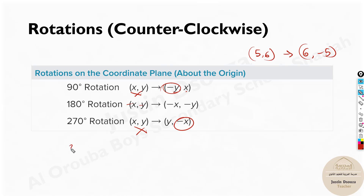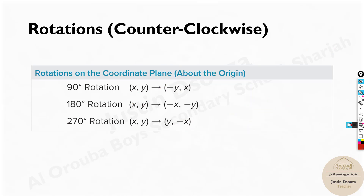What about 360 degrees? If you have a line and rotate it 360 degrees, it returns to its original position. It will not change — the result is the original coordinates themselves.